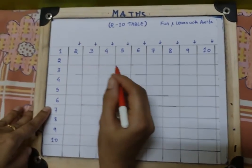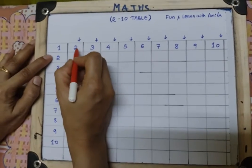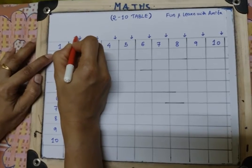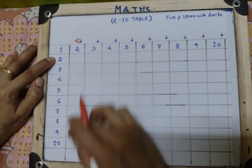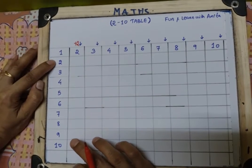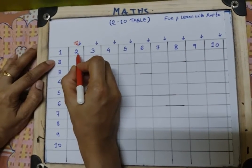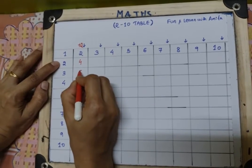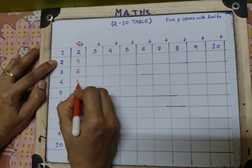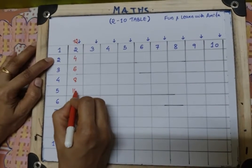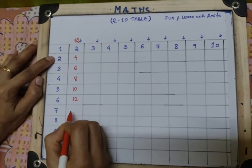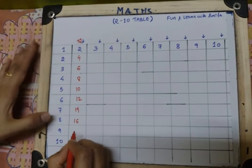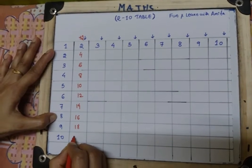Now number 2 is here, so I am going to add number 2 in this column till number 10. So 2, then 4, 4 plus 2 is 6, 6 plus 2 is 8, 8 plus 2 is 10, 10 plus 2 is 12, 12 plus 2 is 14, and 16, 18, and 20.